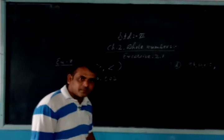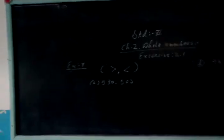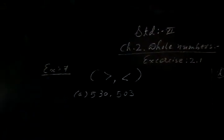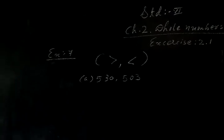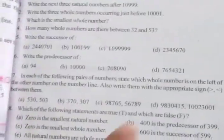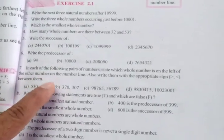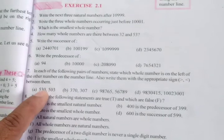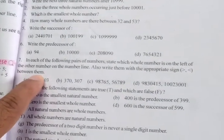Good morning students. Today we are going to learn second chapter whole numbers, exercise 2.1, example number 7. In which of the following pairs of numbers, state which whole number is on the left side of the other number on the number line. Also write them with appropriate sign — greater than or less than — between them.